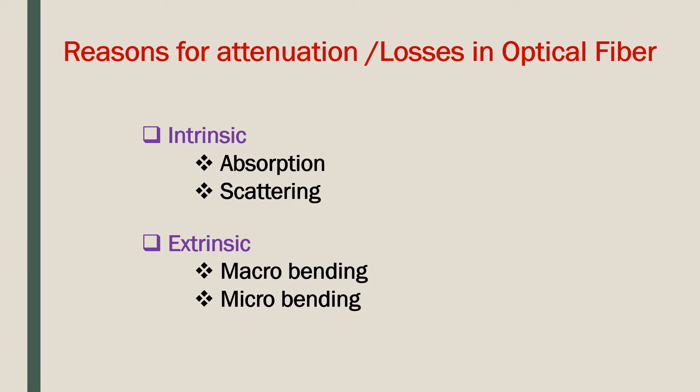Intrinsic attenuation results from materials inherent to the fiber. It is caused by impurities present in the fiber. During manufacturing, there is no way to eliminate all impurities. When a light signal hits an impurity in fiber, either it is scattered or absorbed.